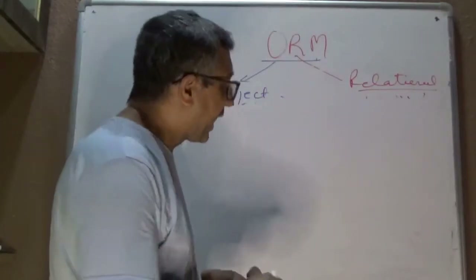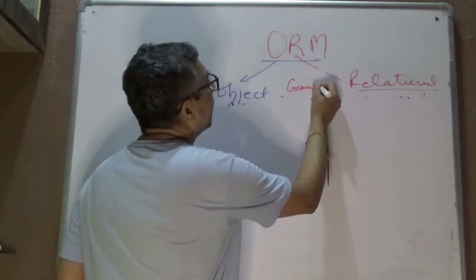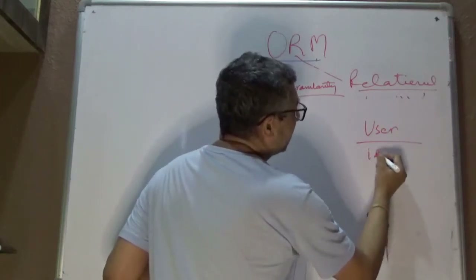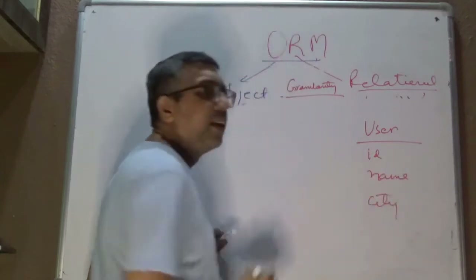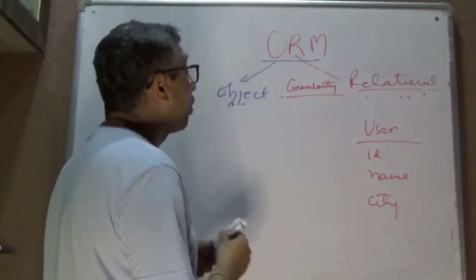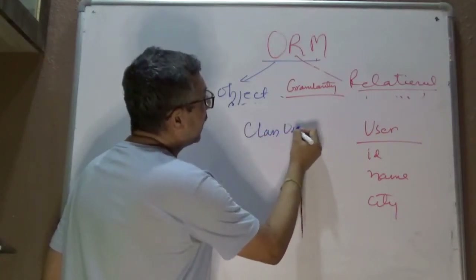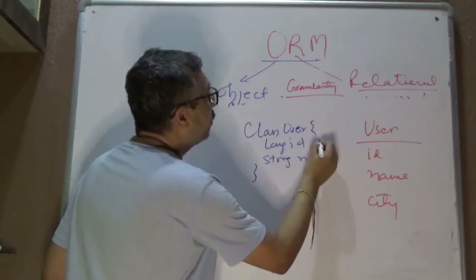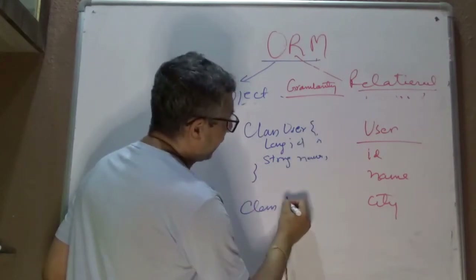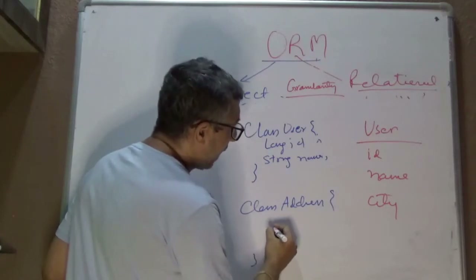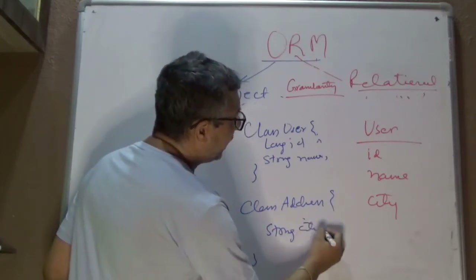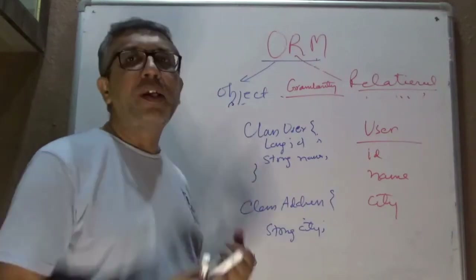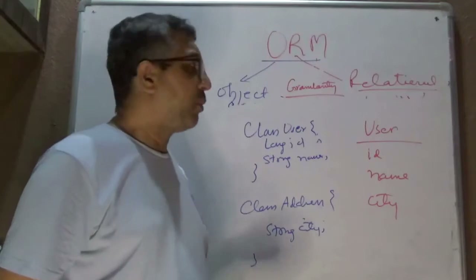Now let's talk about granularity. For example, on the relational side you might have a user table with columns ID, name, and city. But on the Java or object-oriented side, you might want a class User with ID and name, while mapping city to a different class. There is a granularity mismatch — all data points sit together in the table but you want to break them up on the object side.